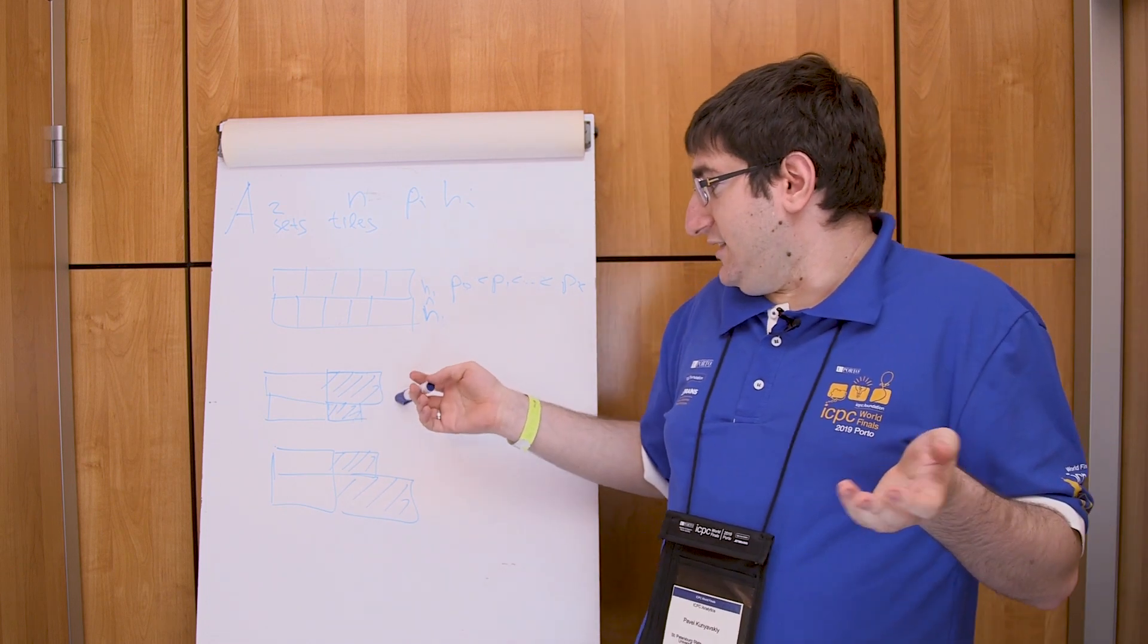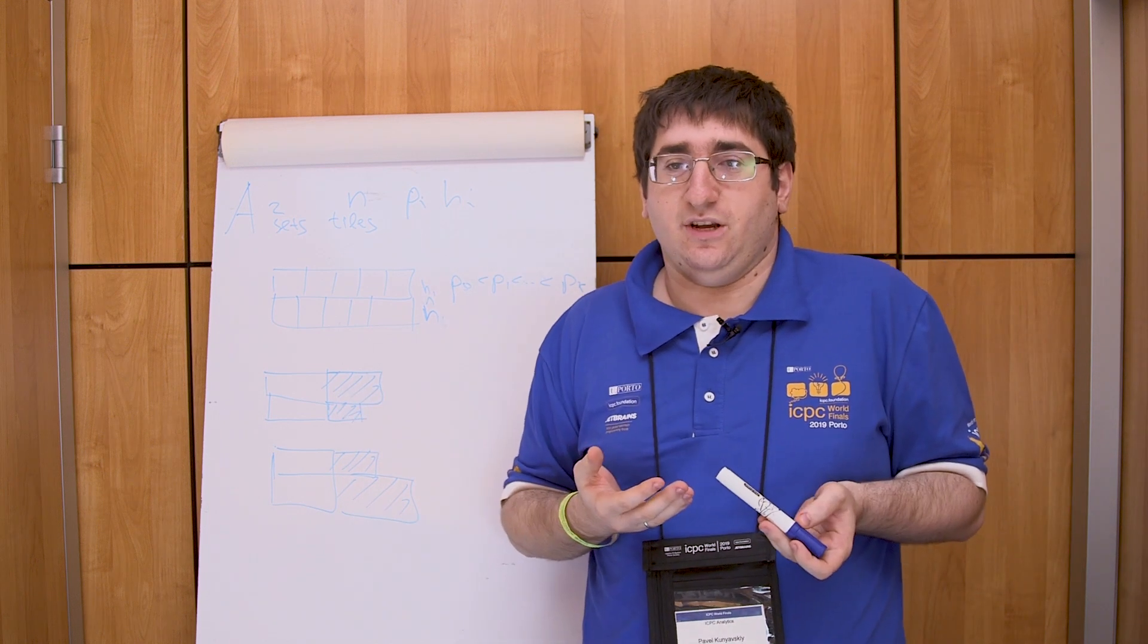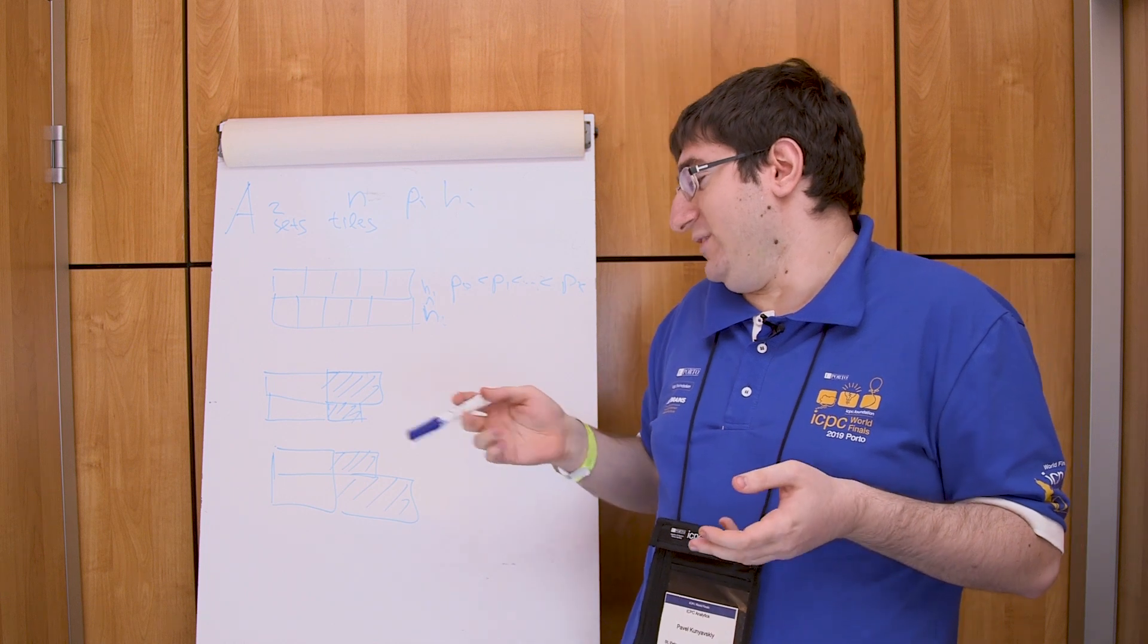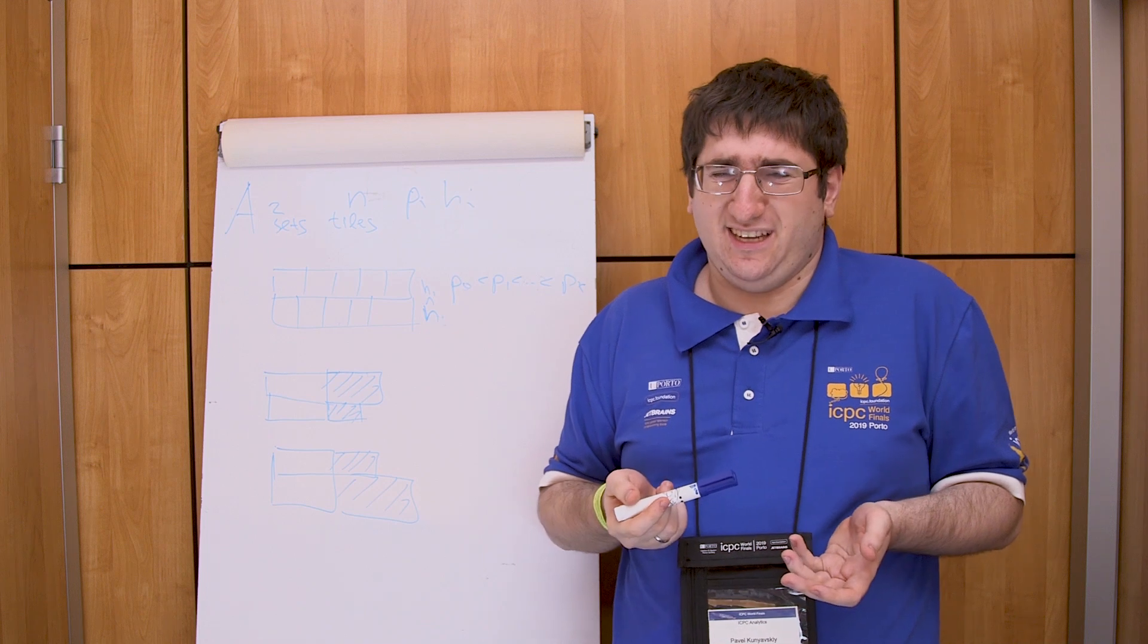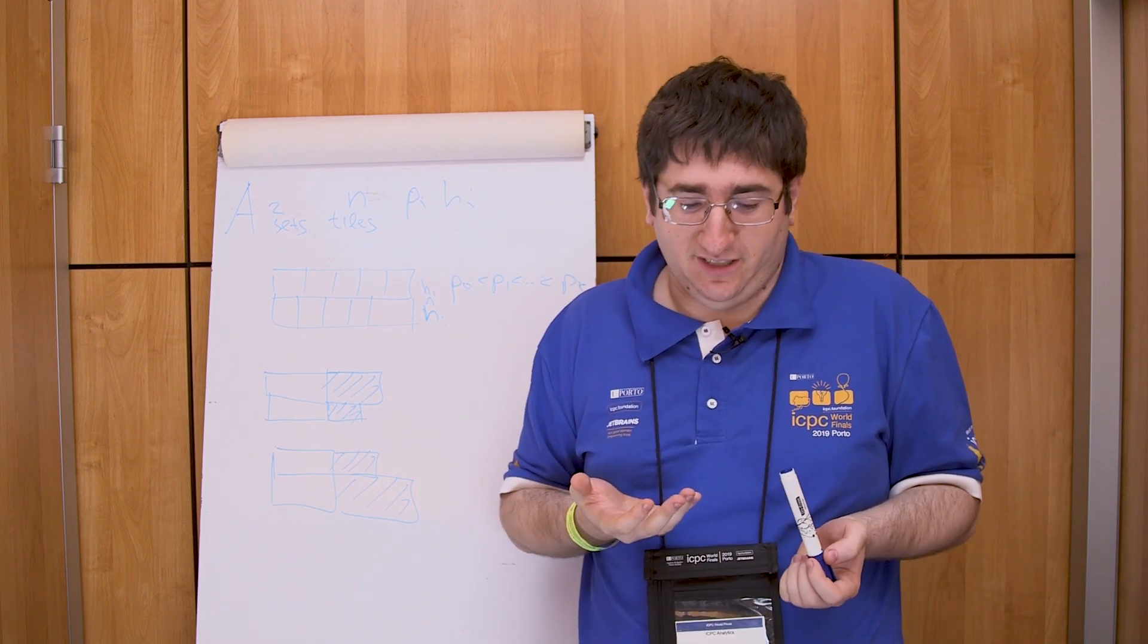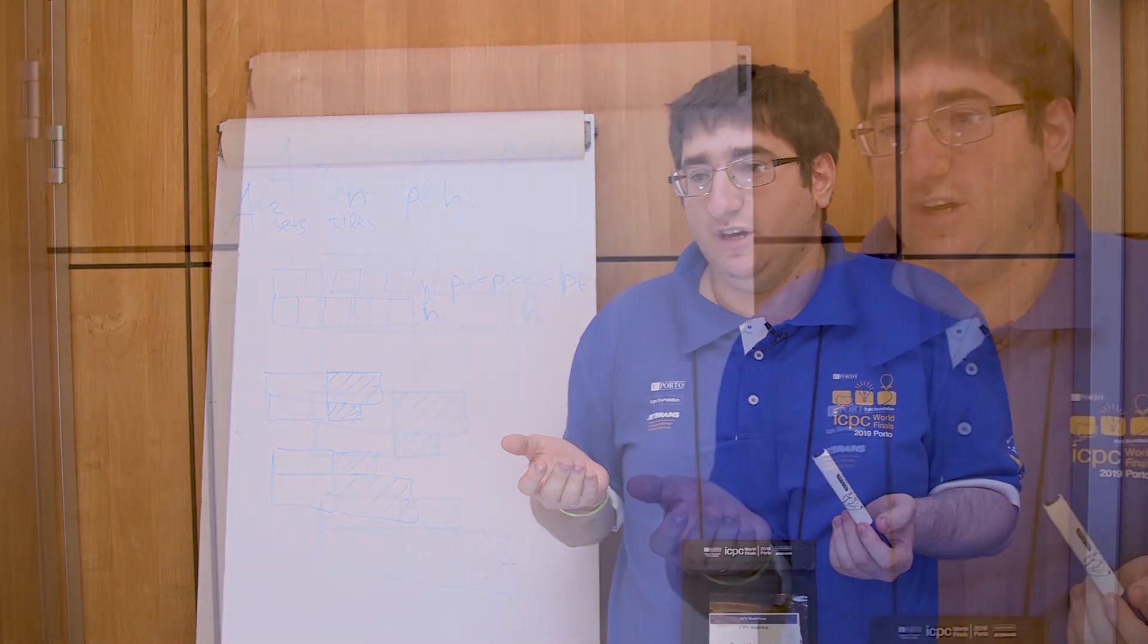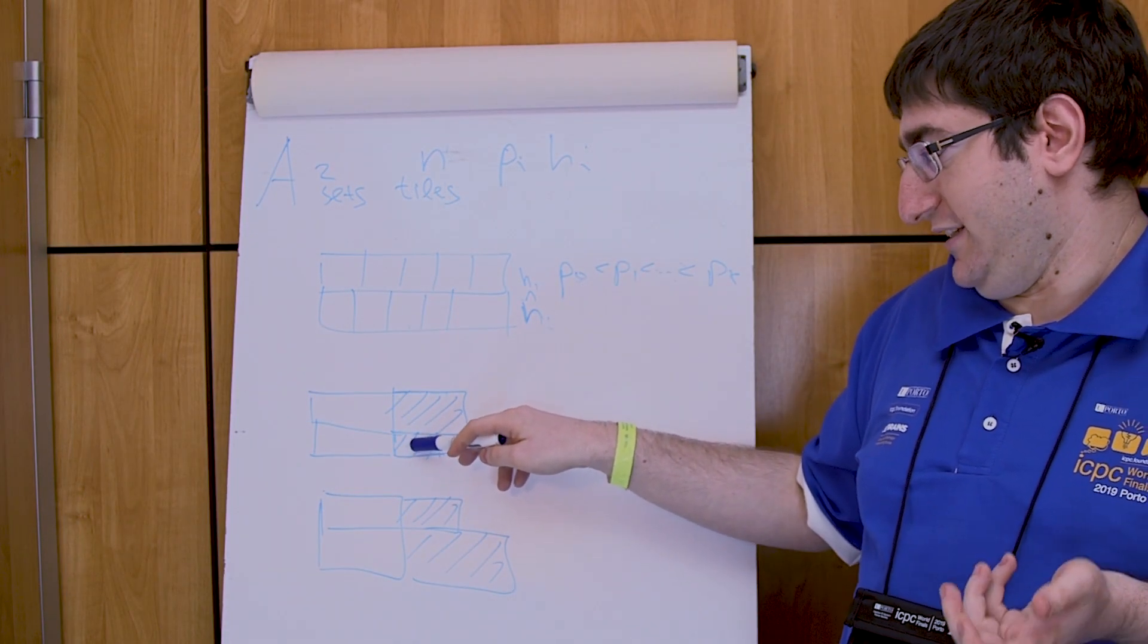Let's consider the first case. The latter one can be solved in the same way. In this case the order of tiles in the second row doesn't matter because they all will be matched with tiles in the first row with the minimal price. So we can fix any order for tiles in the second row in that case.